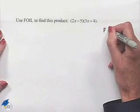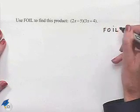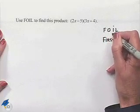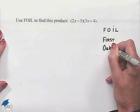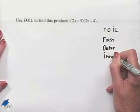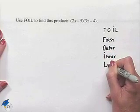Let's recall what FOIL means. The F stands for first, the O stands for outer, the I stands for inner, and the L stands for last.